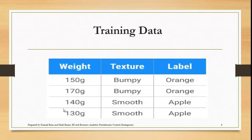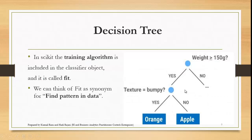This is the training data — very simple: weight, texture, and label. Weight is 150g, 170g, 140g, 130g; texture is bumpy or smooth; and labels are orange and apple. We are using Python, and in Python there is a library called scikit-learn that we are using. In scikit-learn there is a classifier object called fit — it takes in the data and does the predicting after learning.